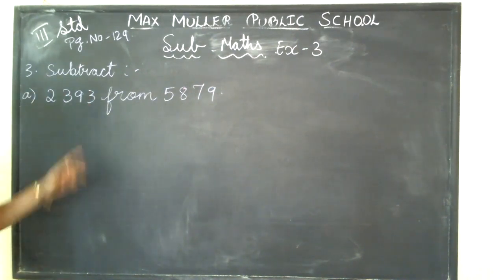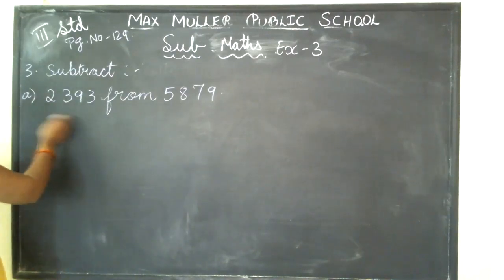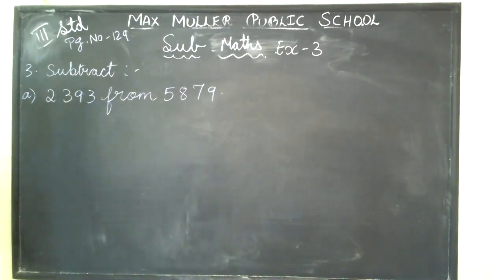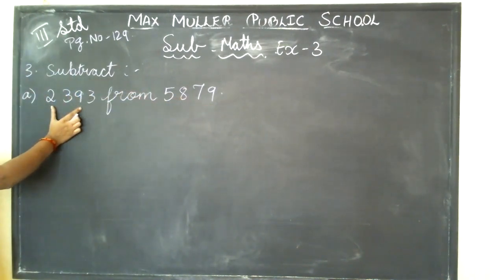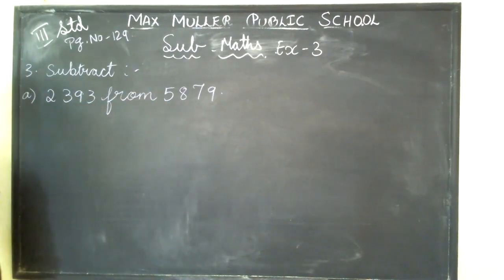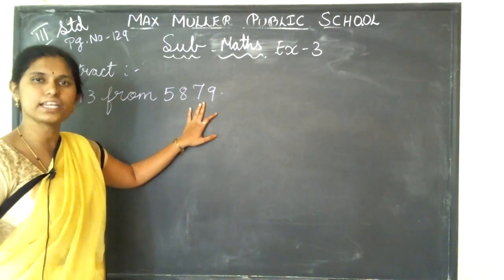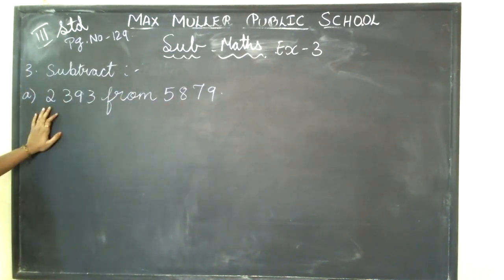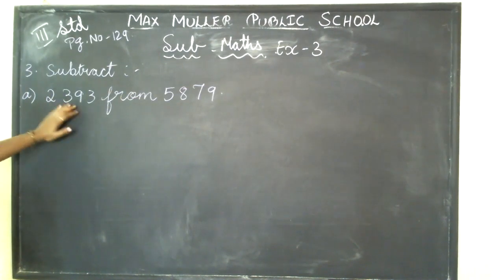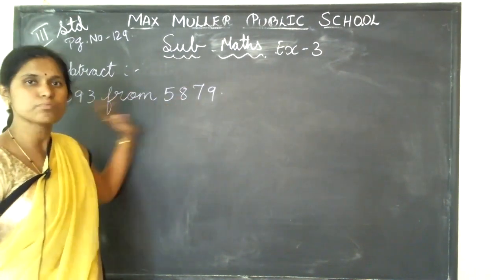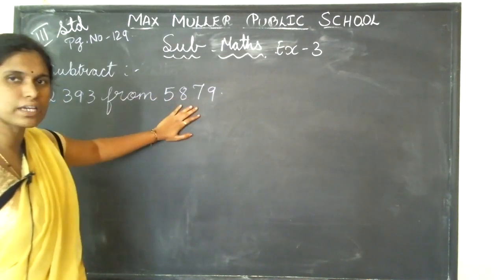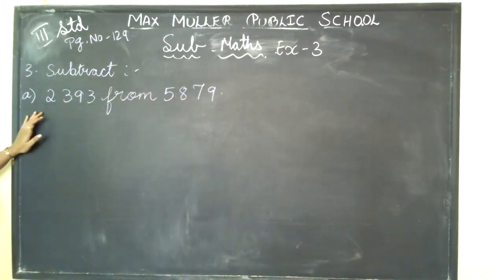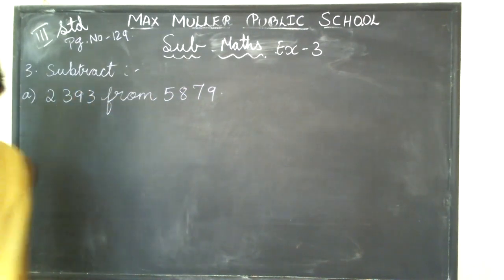The heading says subtract, you have to do that. They have given the number and in the middle they have used 'from'. So what you are going to do here? First we are going to write this number, then we are writing this number. 'From' means — which is the bigger number you can see here? 5879 is the bigger number compared to 2393. From smaller to bigger — can I minus a bigger number from a smaller number? No. So what I am going to do? First I will write the bigger number, then I will write the smaller number. Then you can easily subtract.